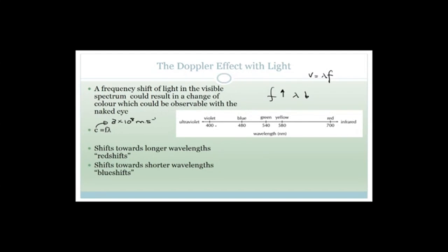This is part of the electromagnetic spectrum — the visible part. We've got violet, blue, green, yellow, and red. It works out red, orange, yellow, green, blue, indigo, violet. Ultraviolet is obviously the higher frequency, and infrared is the lower frequency. The wavelengths are getting bigger as we go further down toward red — so the wavelengths are getting larger but the frequency is getting lower. Shifts towards the longer wavelengths are said to be red shifts. If we see that there's an observable change in the color of the light towards the red, we say it's been red shifted. If it's shifted towards the shorter wavelengths, then we say it's blue shifted.